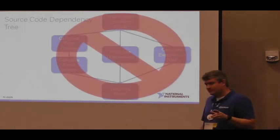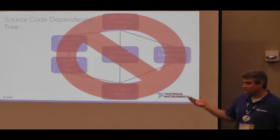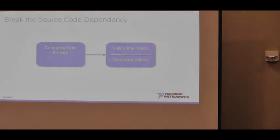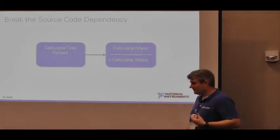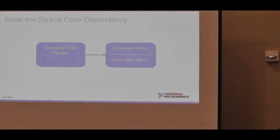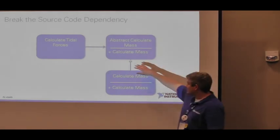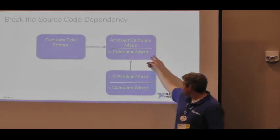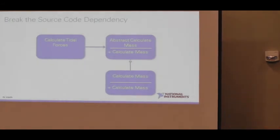It's not necessarily a bad thing, but it's something to keep in mind. What we want to do is break this dependency. Using quasi-UML: calculate tidal force depends on calculate mass — that's not what we want to see. Here's how I fix it: we create an abstraction around our calculate mass class. The abstraction defines the method, and then we can inherit calculate mass from the abstraction. Now if our calculate tidal force depends on the abstraction, and calculate mass implements the abstraction, we're starting to see how we can invert our dependencies. This gets us into demo part two — we're starting to do this in LabVIEW.